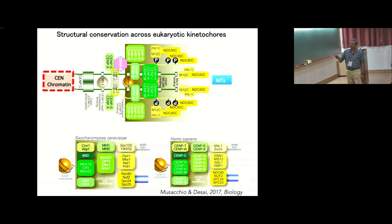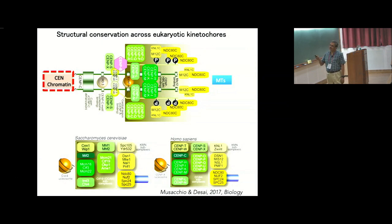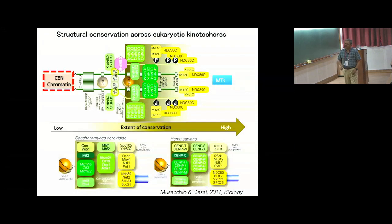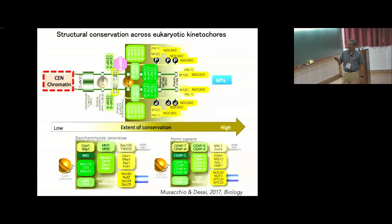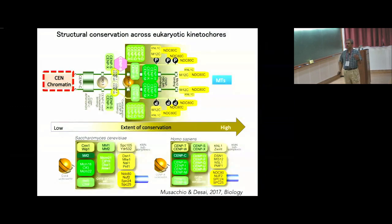CENPA makes the foundation for all the proteins to come and assemble, followed finally by microtubules. Kinetochores are now identified from a large number of organisms by both in silico analysis and experimentally. We see that the centromere chromatin, or centromere DNA, is probably the most rapidly evolving region in chromosomes. As you go towards the outer kinetochore where microtubules bind, the extent of conservation increases more and more.